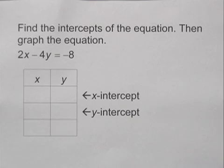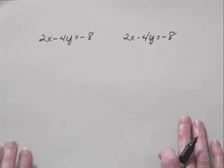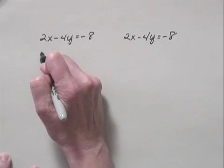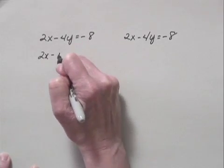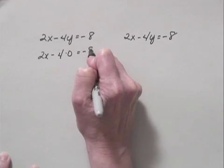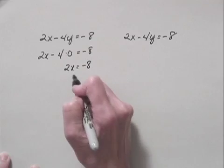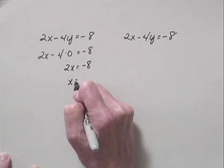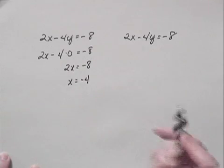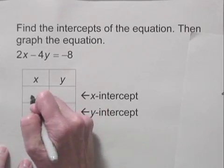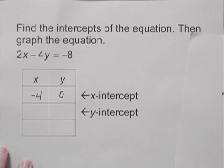Now let's first find the x-intercept. To do that, we let y equal 0 and solve for x. So substituting 0 for y, we have 2x equals negative 8. Dividing both sides by 2, we get x equals negative 4. So the x-intercept is negative 4, 0.